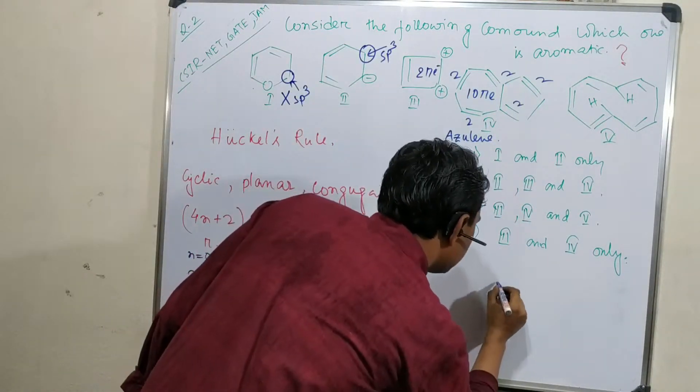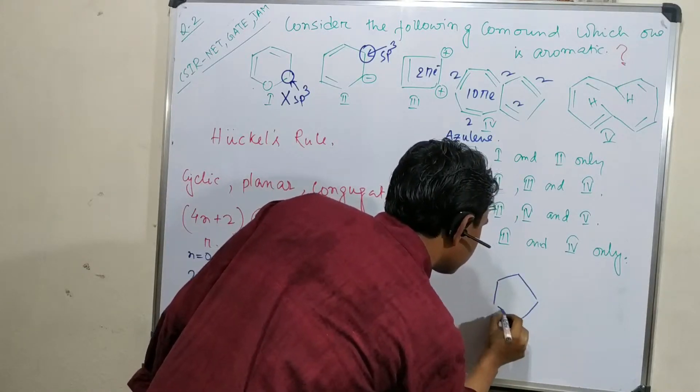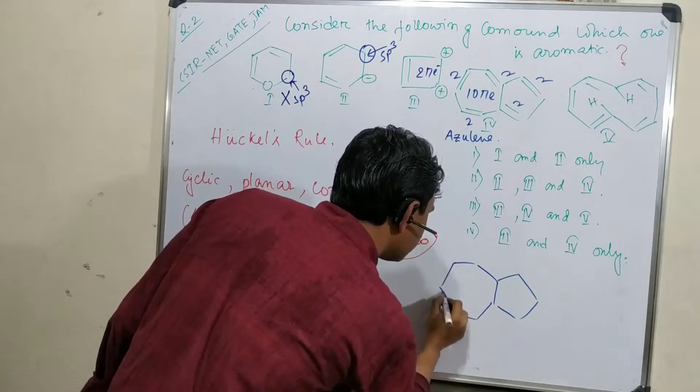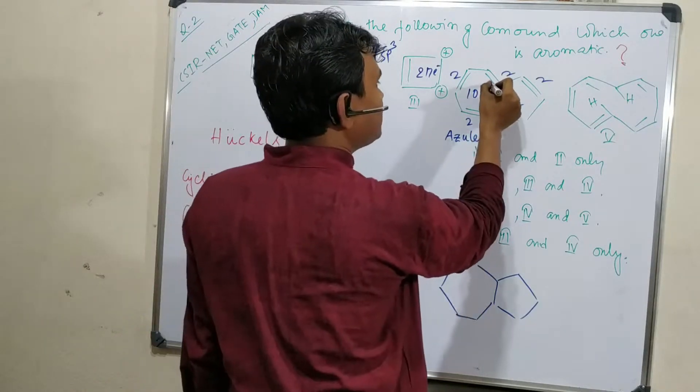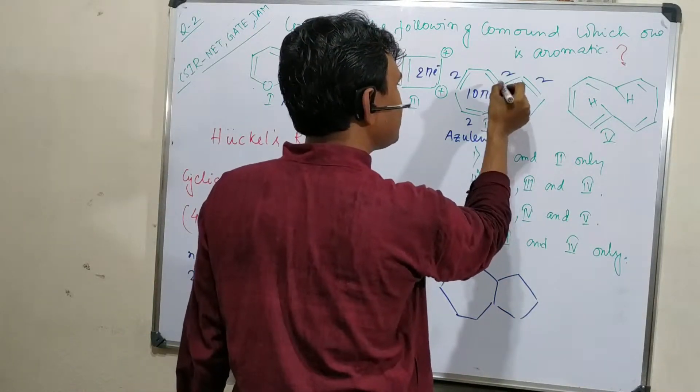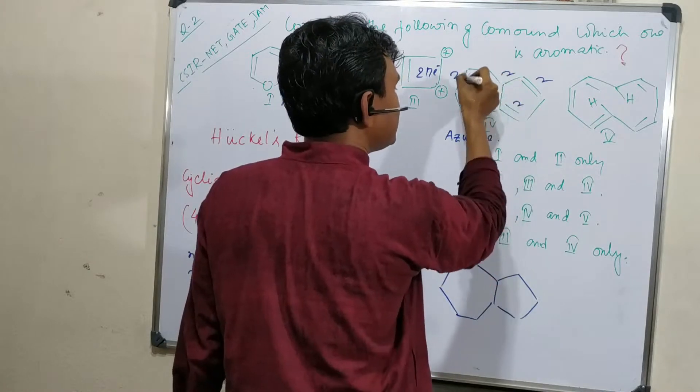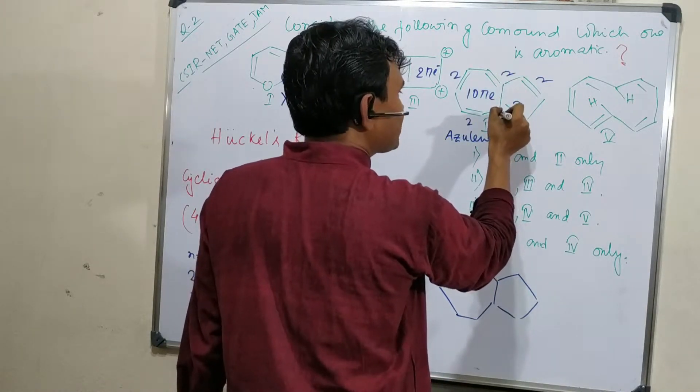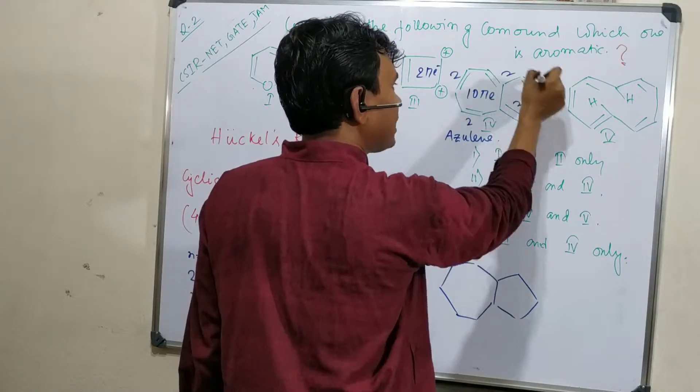I'll draw it. This is 5-member ring, this is 7-member, please follow the technique to draw. And what happens: this ring gets 1 electron, this ring loses 1 electron because here in this ring 7 pi electrons are there, 7 carbons, and here 5 carbons, so 5 pi electrons.